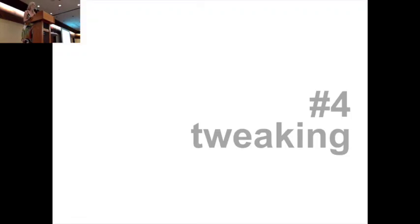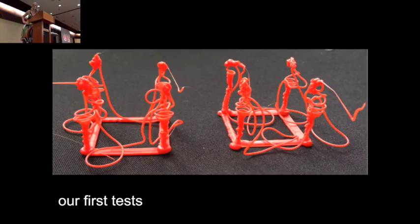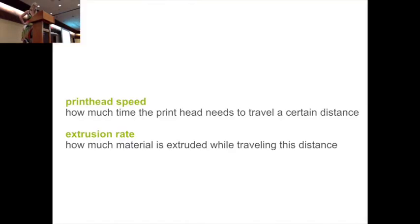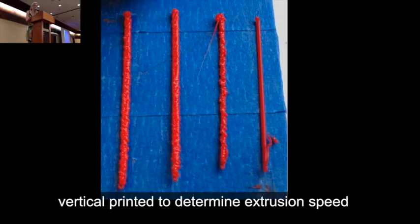Getting WirePrint to work also involved a lot of tweaking on the material side. The first thing we had to tweak was extrusion speed. This is one of our first vector prints we made and as you can see there is way too much material extruded. There are two important factors involved to get this right: the first one is the print head speed, how much time a print head needs to travel a certain distance, and there's also the extrusion rate, which is how much material is extruded by traveling that distance. We did a little test to find the correct extrusion rate for a given speed by simply varying the extrusion rate and looking at what works best.